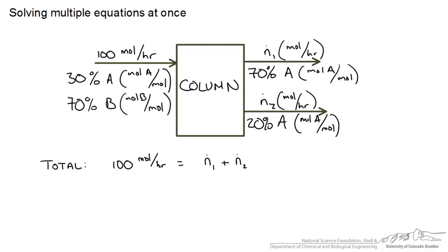Now the goal is to determine the flow rates out of the column and we have designated those as n1 and n2. So if we do a total balance we get an equation that says 100 equals n1 plus n2. Basically whatever goes in must equal what is coming out.